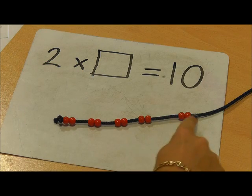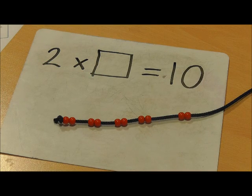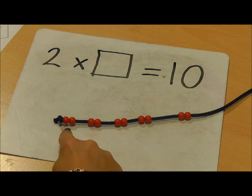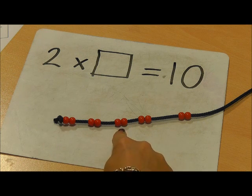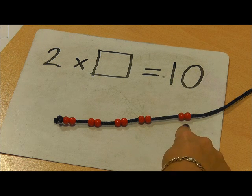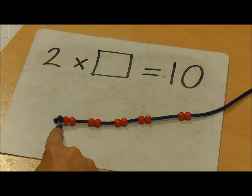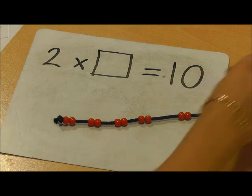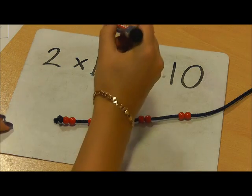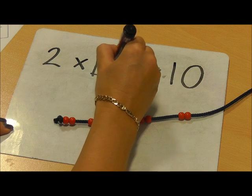I have 10 beads and I can see that if I put them into twos: 1, 2, 3, 4, 5. So 2 five times makes 10. Therefore my answer is 5.